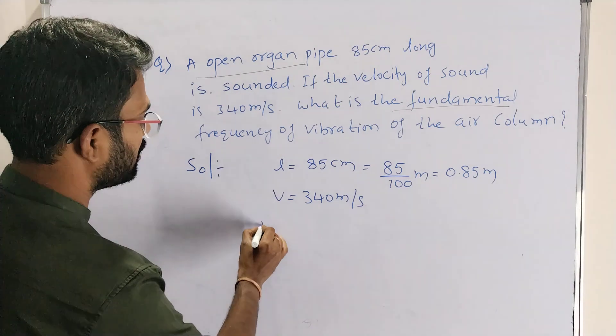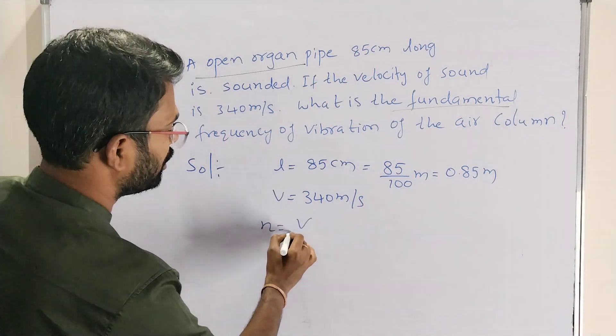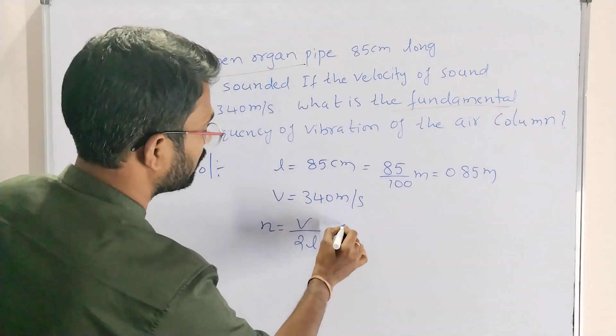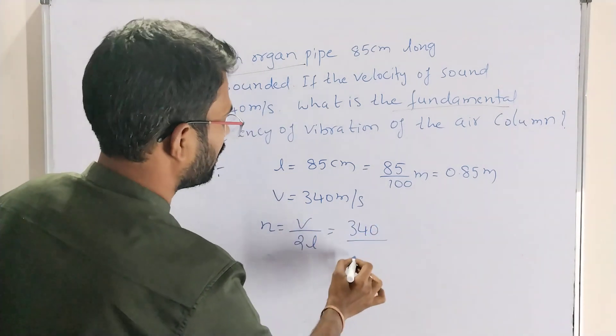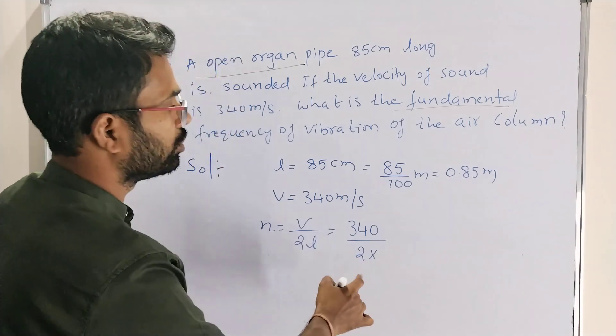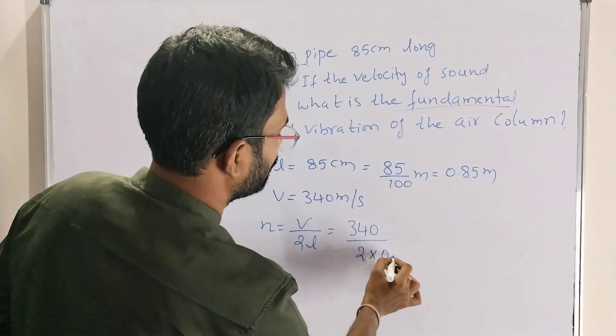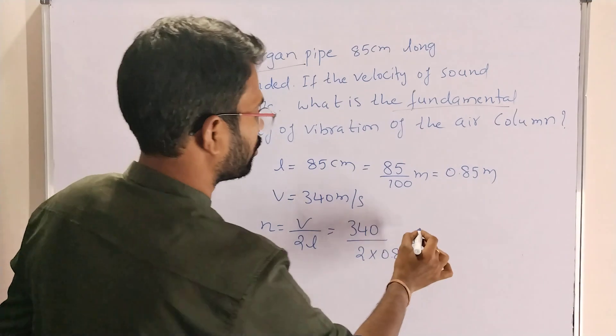When fundamental frequency of open pipe, frequency n equals v by 2L. Here v is 340, 340 by 2 into L, means 0.85.